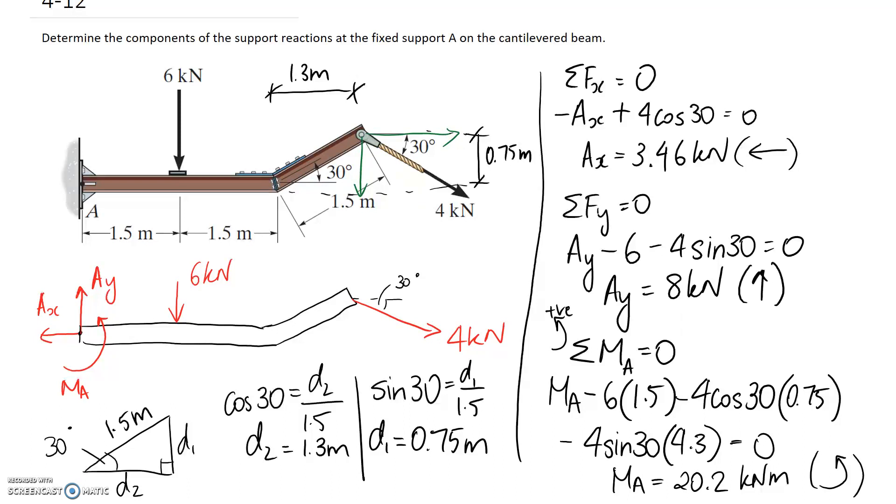So that's the answers for this question we've got a horizontal reaction of 3.46 kilonewtons to the left we've got a vertical reaction of 8 kilonewtons upward and the moment reaction provided is 20.2 kilonewton metres anti-clockwise so that's all there is for this question and I'll see you in the next video.